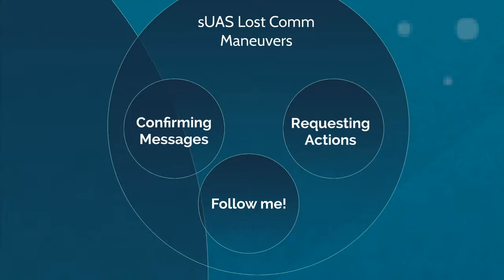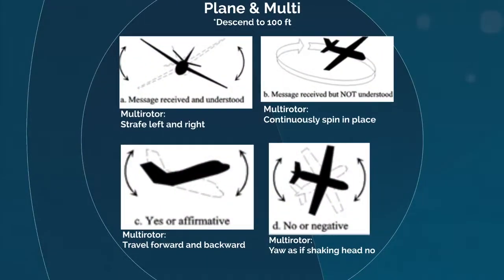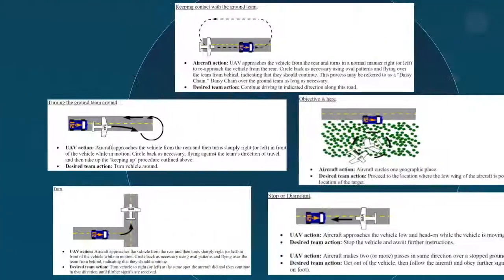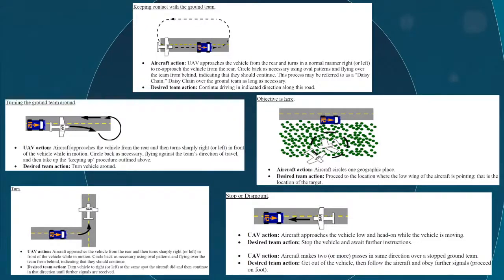SUAS teams can use a variety of maneuvers when confirming messages, requesting actions, and asking teams to follow. If an SUAS team discovers they can receive radio messages but no longer send them out, they can use these techniques if communications are needed to proceed with the sortie. Multi-rotor versions are added underneath the plane recommendations. The biggest thing to remember is that these maneuvers were taken directly from CAP's manned aviation instructional material — applying them to SUAS requires teams to coordinate on speed. Ground teams must be traveling at half or less of the drone's maximum speed, otherwise you'll never overtake them.